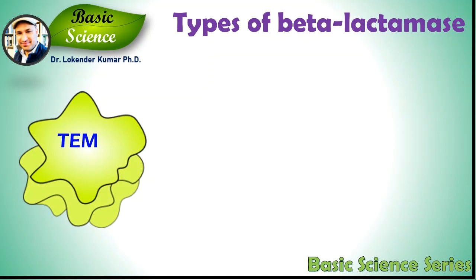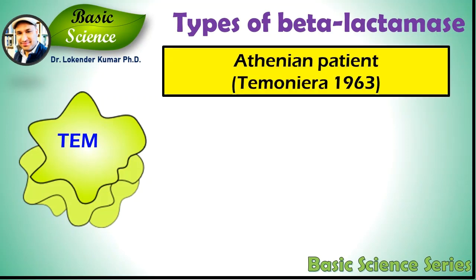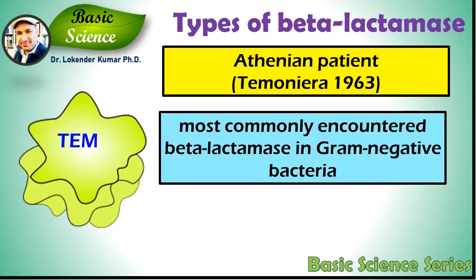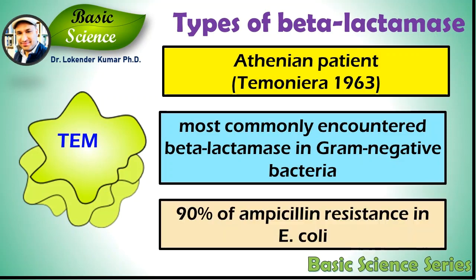The term TEM came from the name of an Athenian patient, Timonera, from which the isolate was recovered in 1963. TEM-1 is the most commonly encountered beta-lactamase in gram-negative bacteria. Up to 90% of the ampicillin resistance in E. coli is due to the production of TEM-1.